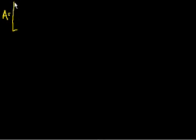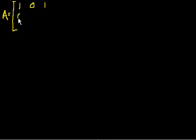So let's start with a 3 by 3 matrix and try to take the inverse. Let's say I have matrix A. I'm going to need a lot of space here. I'm specifically choosing this matrix because the numbers are reasonably non-hairy. Matrix A equals: row 1 is 1, 0, 1; row 2 is 0, 2, 1; row 3 is 1, 1, 1.